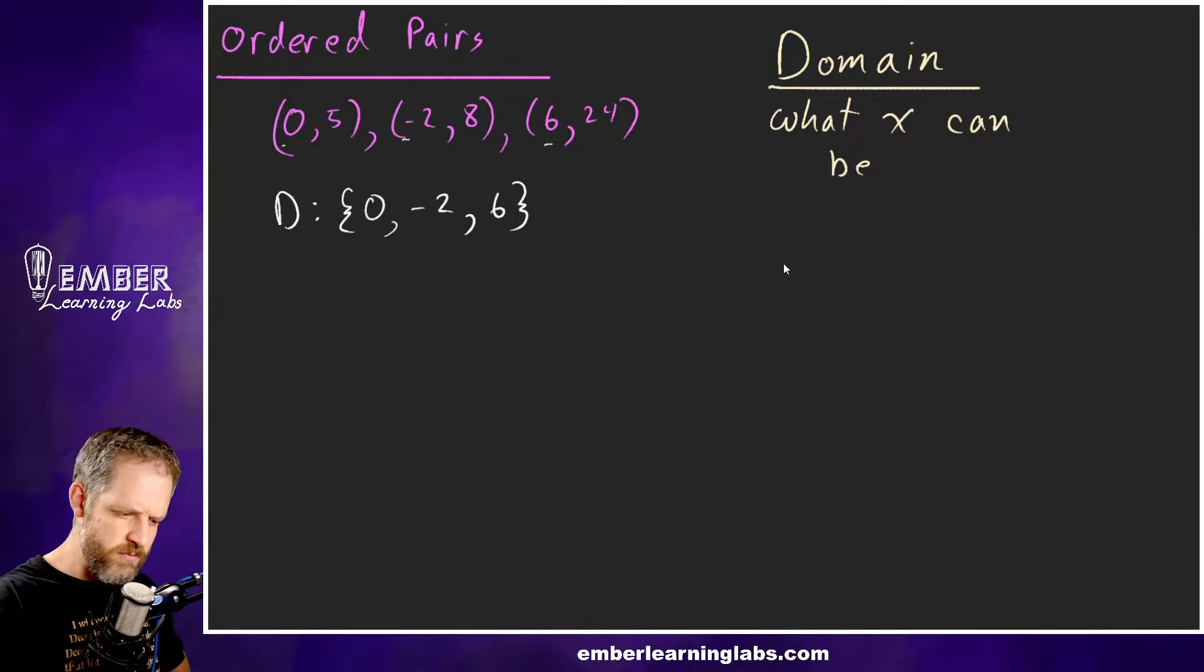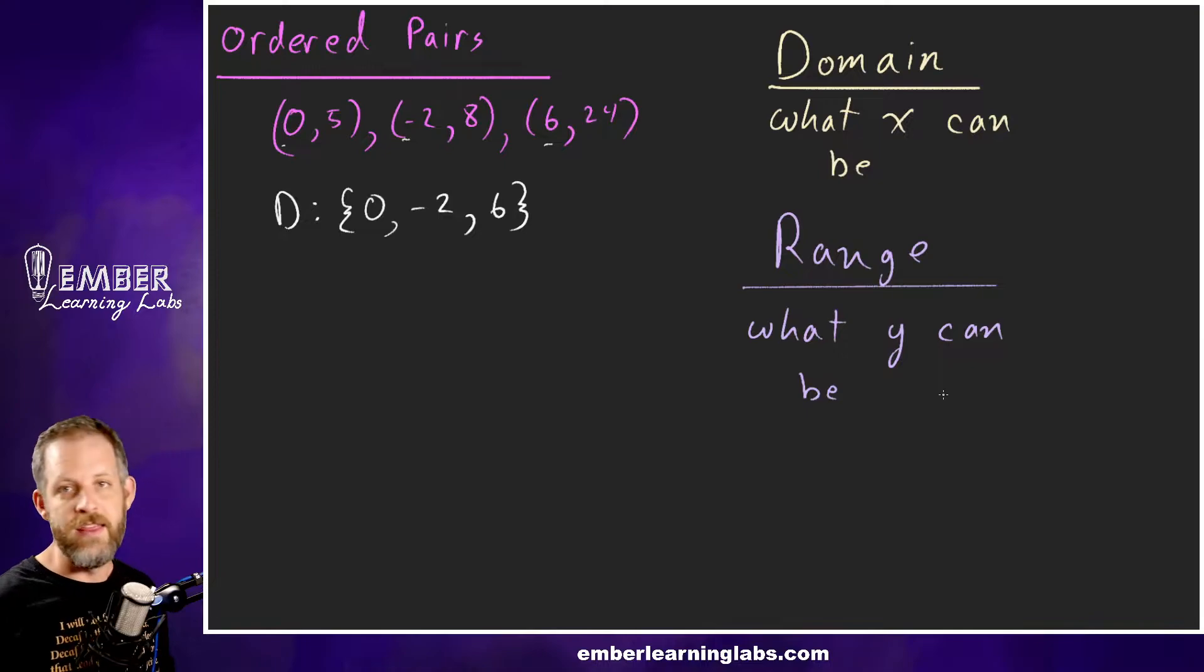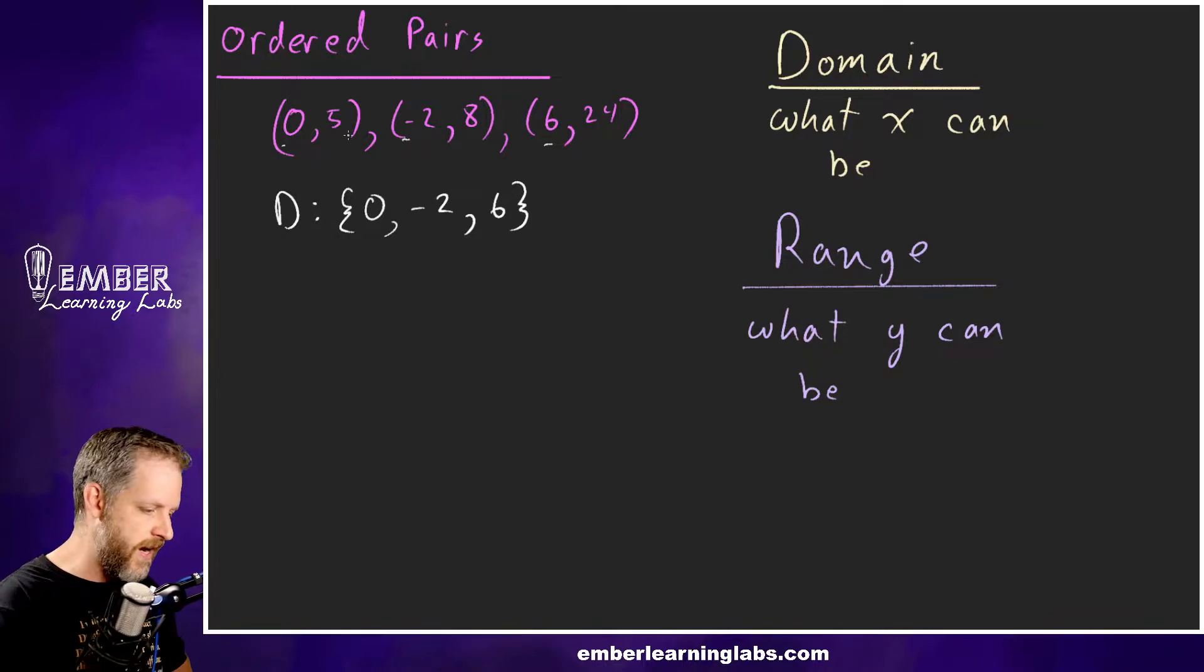The range is what y can be, or the list of all the dependent variables, or the outputs of the function. In this case we're looking at things like 5, 8, and 24. So the range in this case would be that set: {5, 8, 24}.